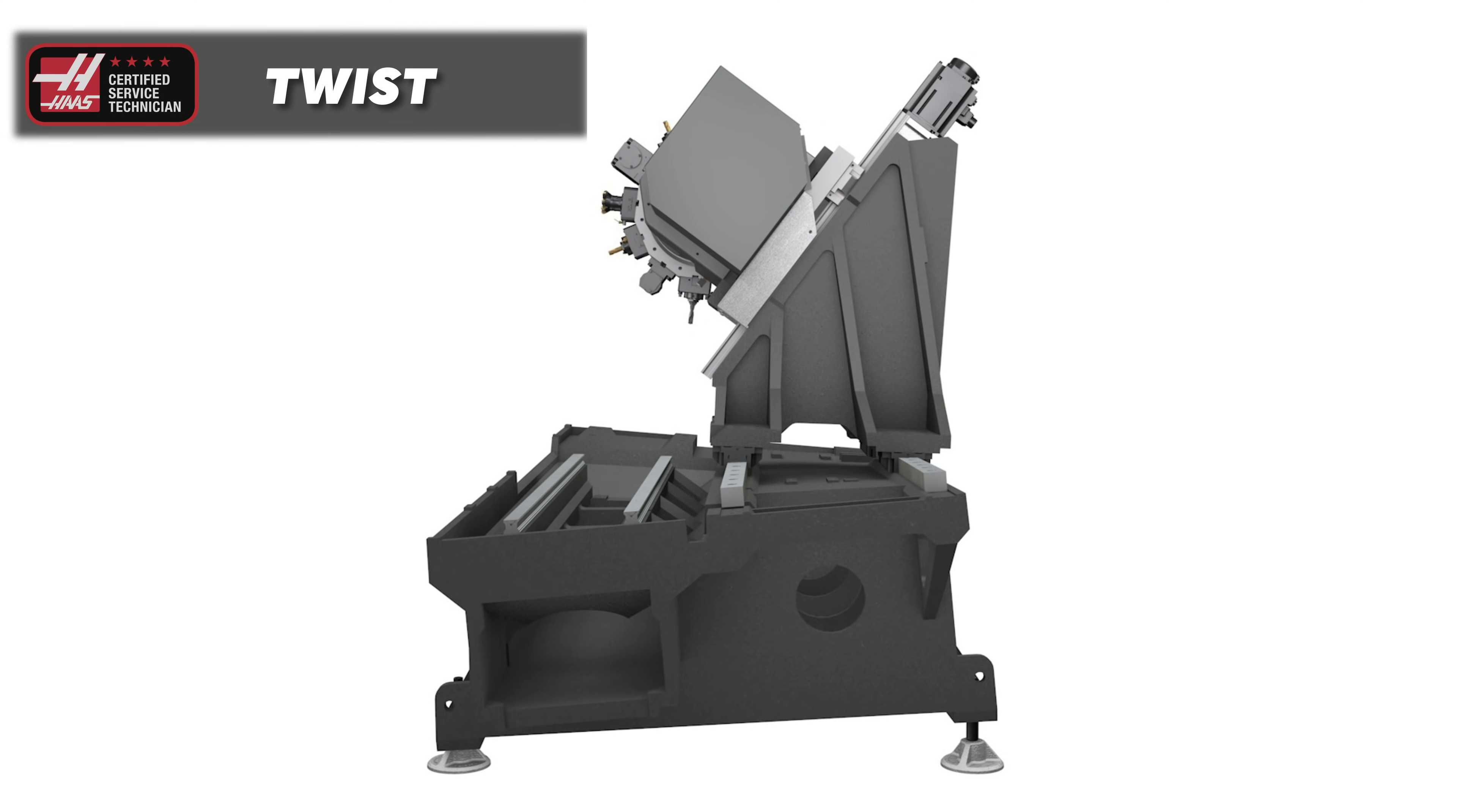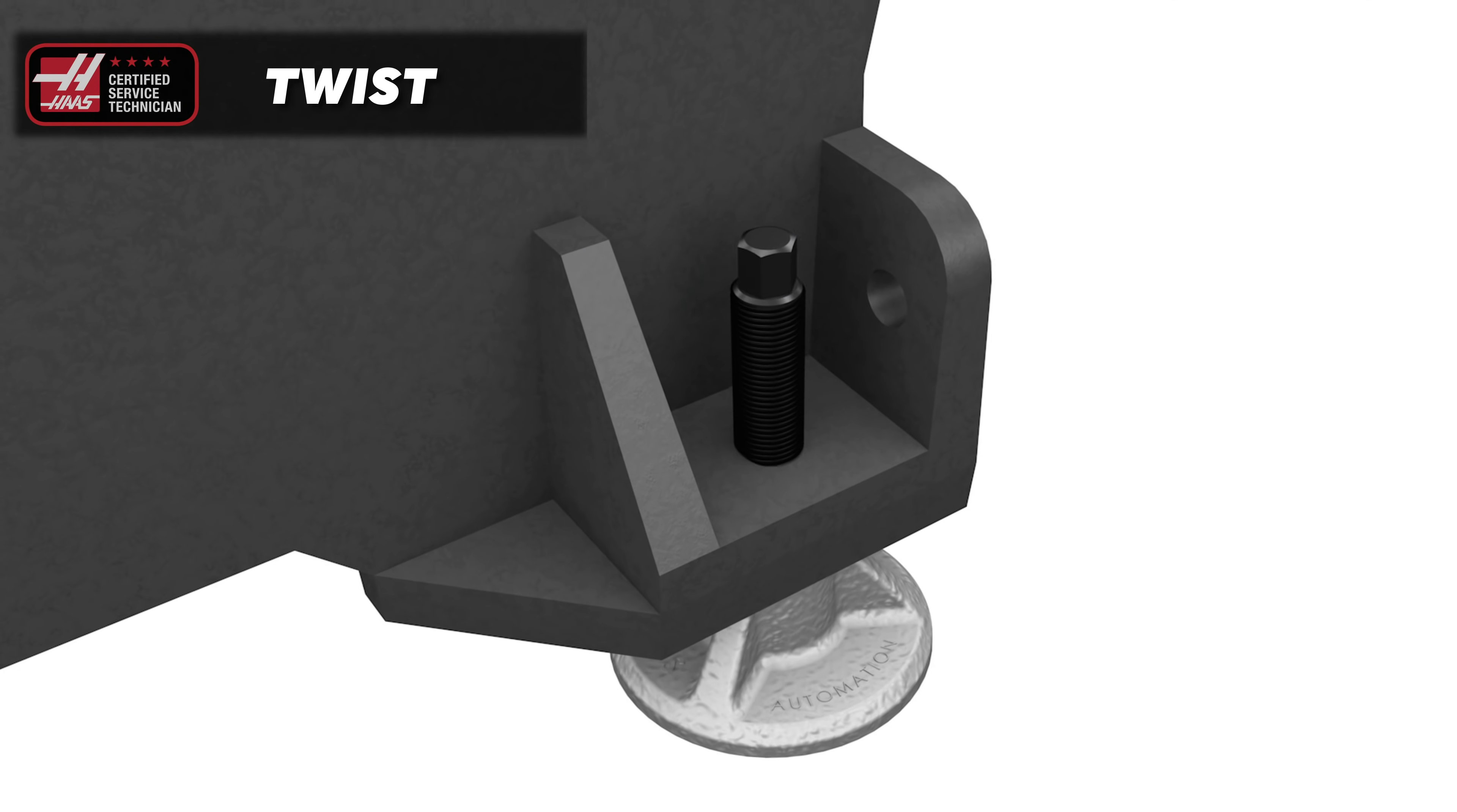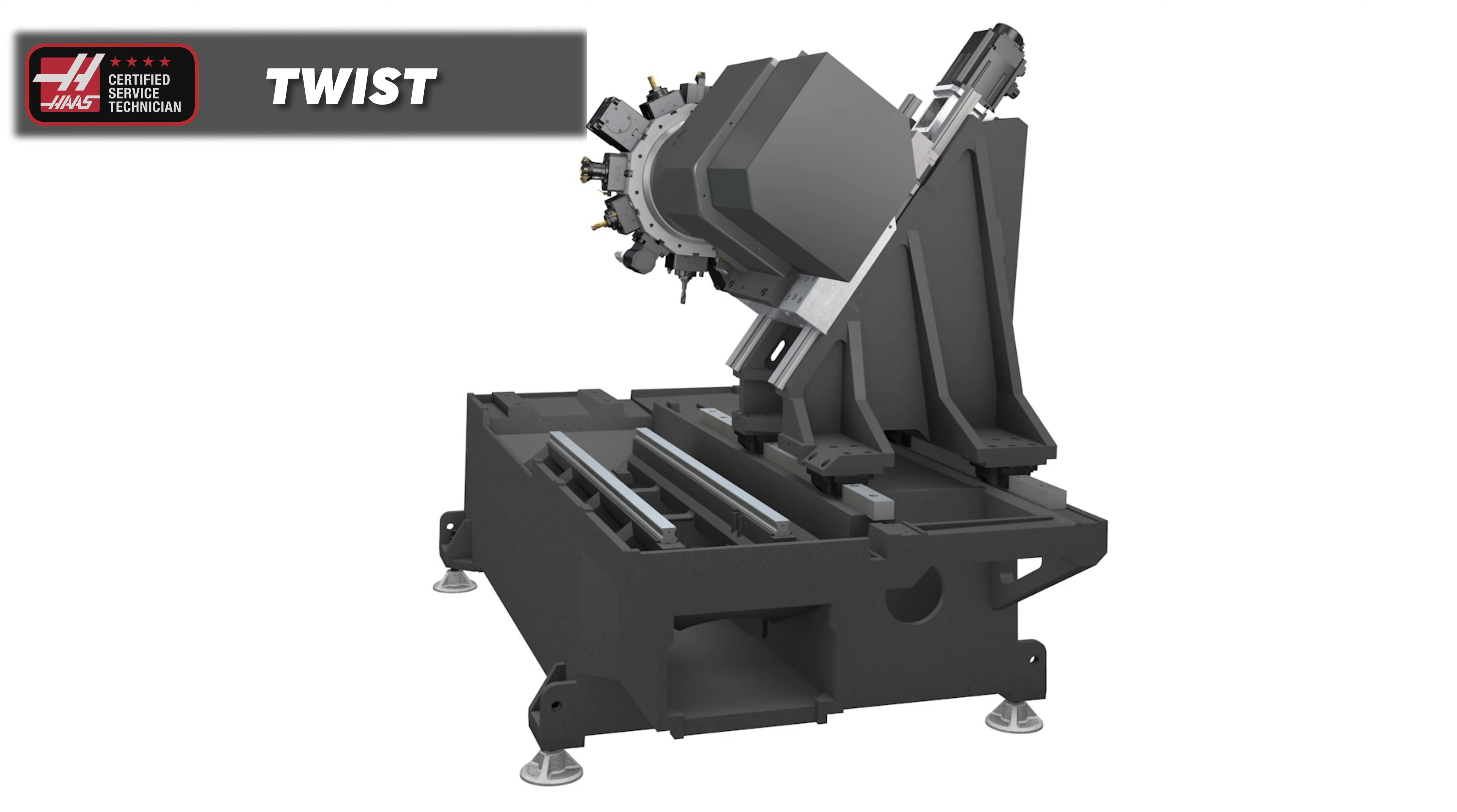This is the area of the leveling process that will make all the difference in the world to how your machine performs. Since twist compromises the geometry of your machine, it can introduce error into machine parts and leave them out of round.